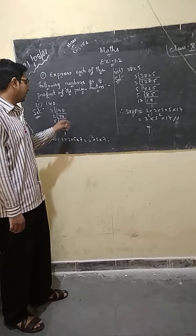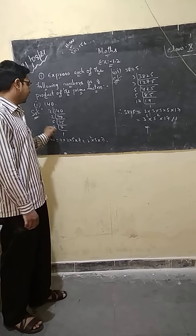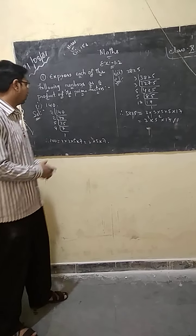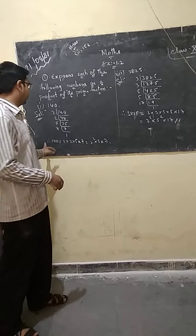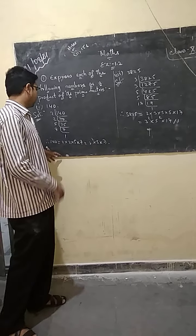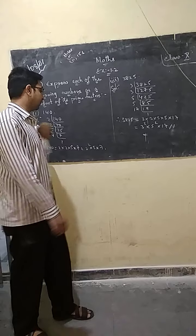The factors of 140: 2 times 70 is 140, 2 times 35 is 70, 5 times 7 is 35. So the factors of 140 are 2, 2, 5, and 7.